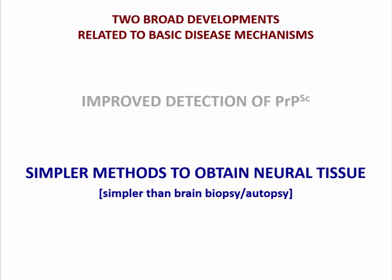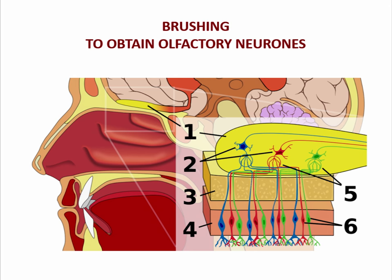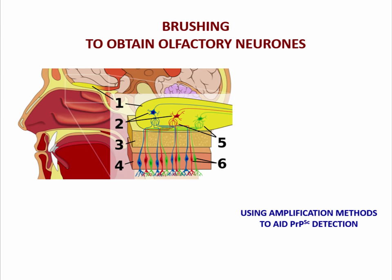On simpler methods to obtain neural tissue: in order to smell things, molecules go up your nose and meet specialised neurons that deal with smell — these are effectively outgrowths of the brain. So if you put a brush up into the nose, you can obtain certain nerve cells from the top of the nose — actual neural tissue. If you then use amplification methods on these bits of nerve tissue, you may be able to detect PRPSC. This is a relatively new and interesting development.